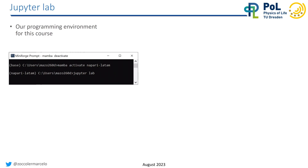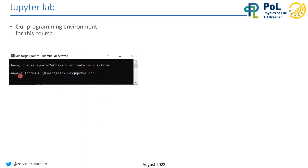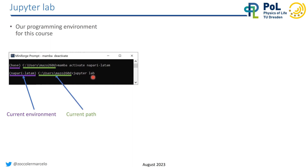You may start with the command prompt and then activate the environment we created for this course — later on you activate the environment you're using in your project. Then if you have the necessary packages installed, you just type 'jupyter lab' after activating, and this should open a new tab in your browser with JupyterLab. Pay attention that in the very beginning you have the current environment, usually followed by your current path. In my case I'm on Windows, so this is the path where I'm currently opening JupyterLab from.